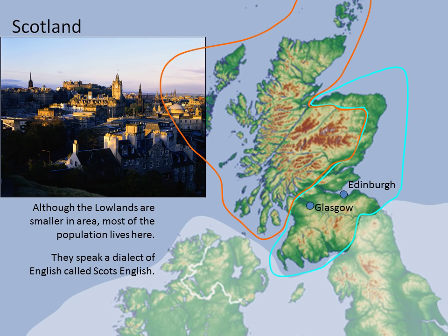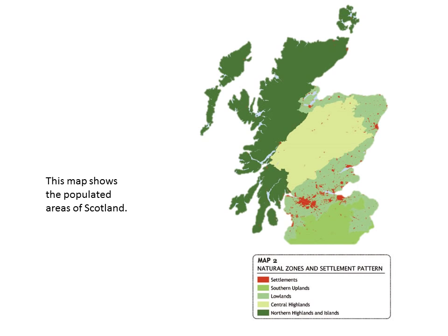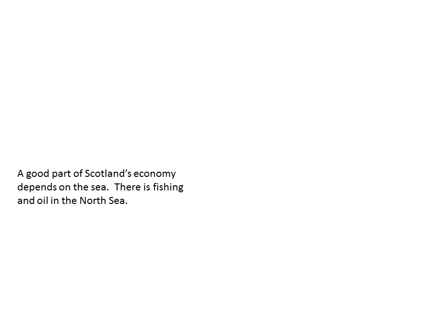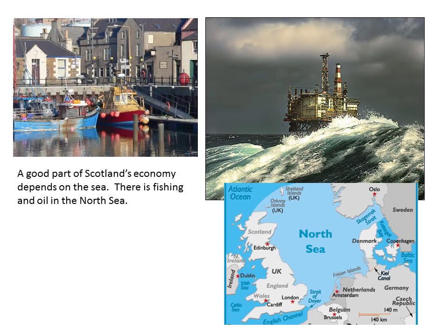They speak a dialect of English called Scots English, which most people can understand most of the time. This map shows the populated areas of Scotland. A good part of Scotland's economy depends on the sea. There's fishing and oil in the North Sea, which is here between Scandinavia, the Netherlands, and the UK.